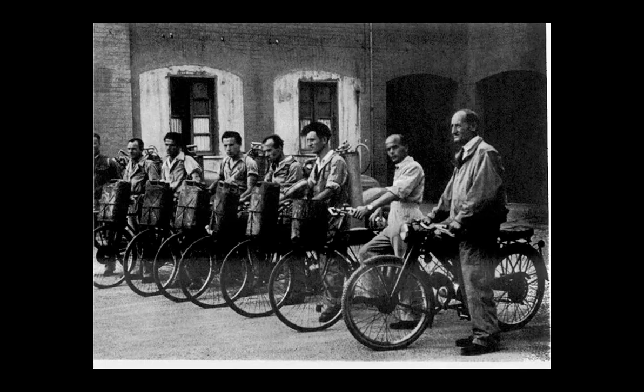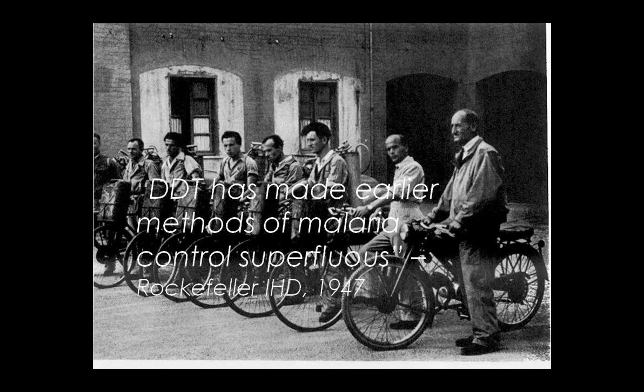The most important contributor to the rise of vector control in the 1940s was the development of DDT, which could control malaria for long periods of time very cheaply. Spraying of huts and houses could result in control of malaria for six months to a year. It was cheap and allowed vector control to be applied to whole countries, not just areas of economic and social development. By 1947, the Rockefeller International Health Division declared earlier methods of malaria control superfluous.